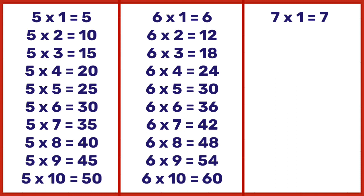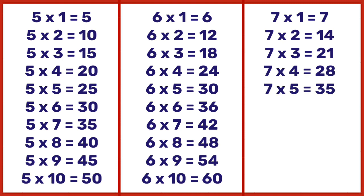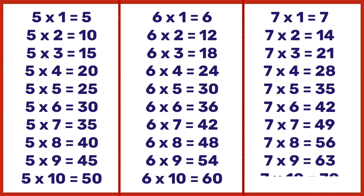7 times 1 is 7, 7 times 2 is 14, 7 times 3 is 21, 7 times 4 is 28, 7 times 5 is 35, 7 times 6 is 42, 7 times 7 is 49, 7 times 8 is 56, 7 times 9 is 63, 7 times 10 is 70.